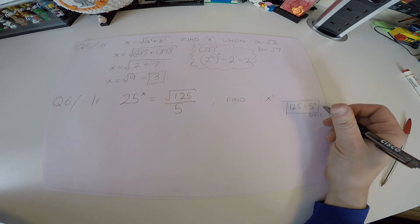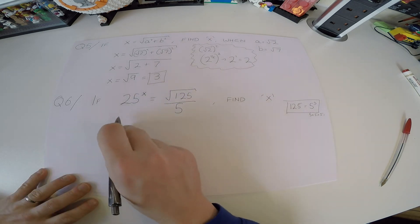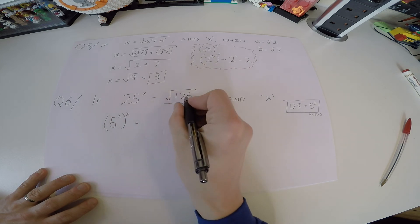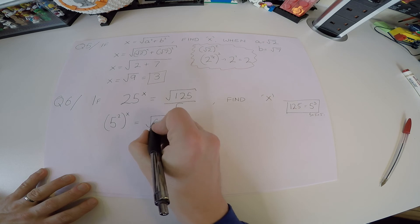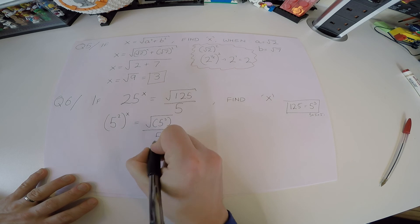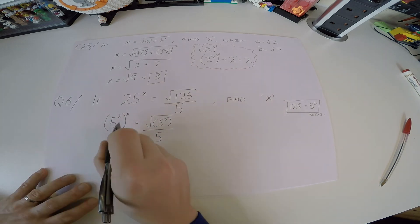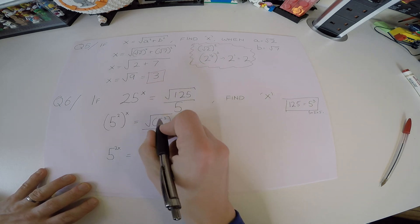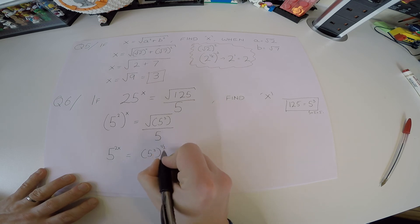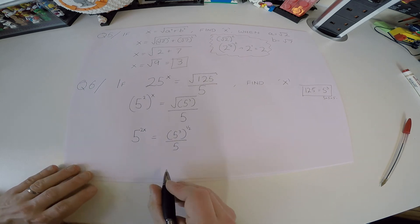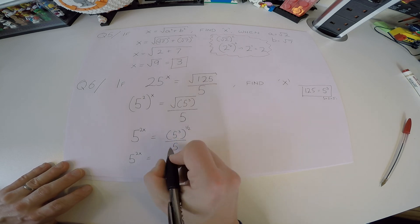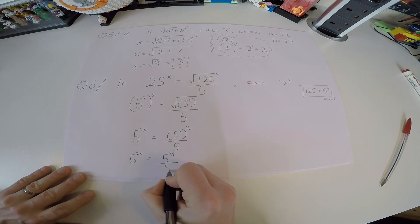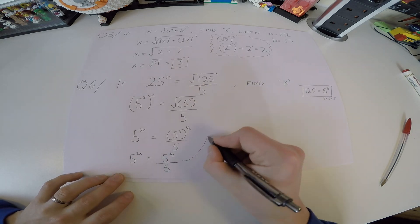So I can change everything to powers of 5. Left side: 5 squared to the power of x gives 5 to the 2x. Right side: square root of 5 cubed over 5. Change the square root to a power of a half: 5 cubed to the half gives 5 to the 3/2, still over 5. Bringing the bottom 5 up changes it to 5 to the minus 1. Now, same base multiplication means we add the powers: 3/2 plus (−1).